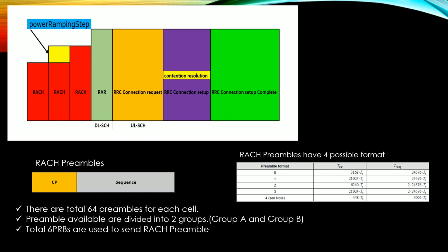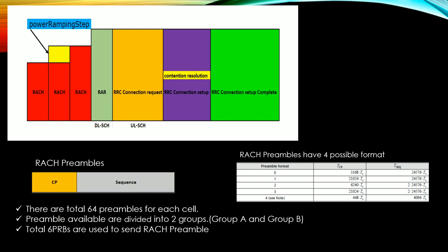The 64 preambles available are divided into two groups: group A and group B. A total of six PRBs, which I have already mentioned, are used to send the RACH preambles. These six PRBs are the requirements for initiating the RACH process.